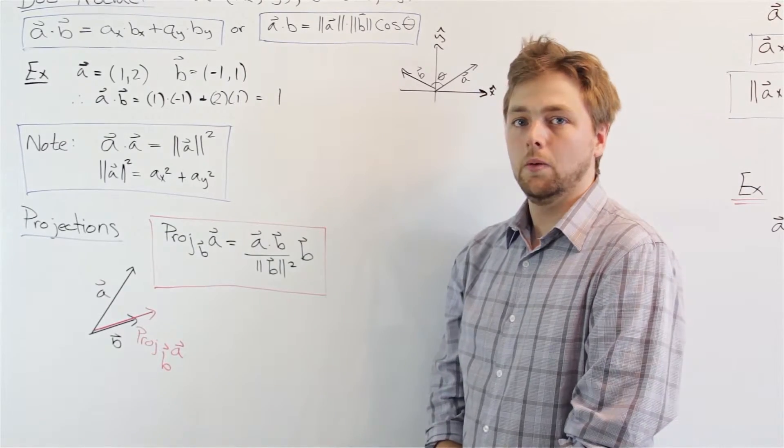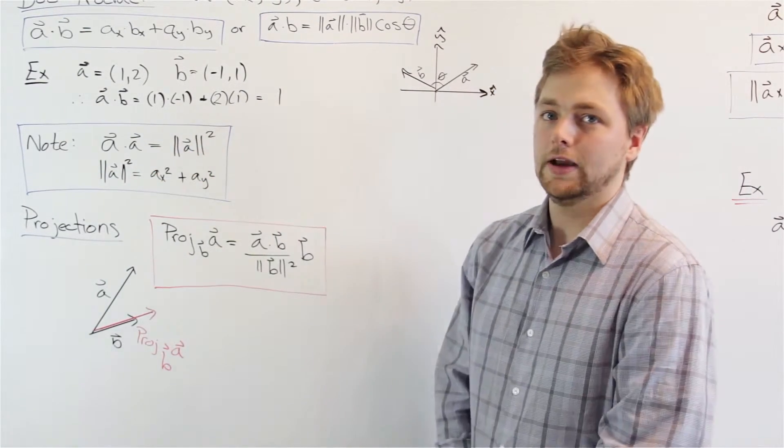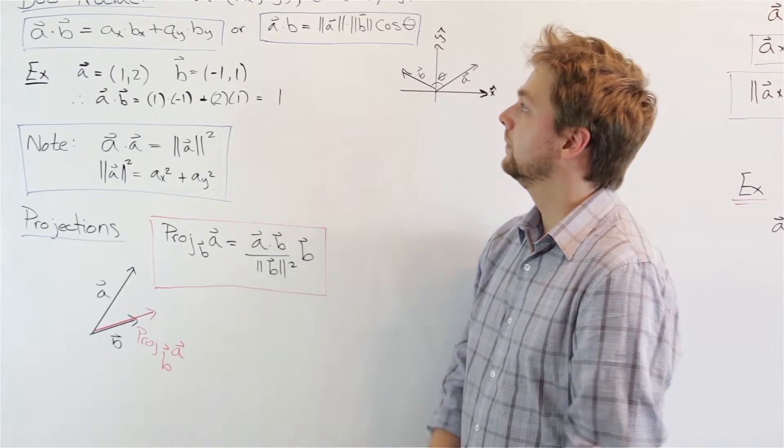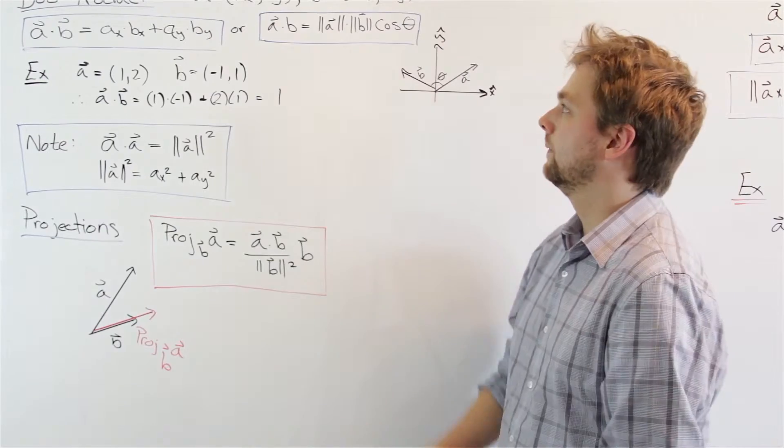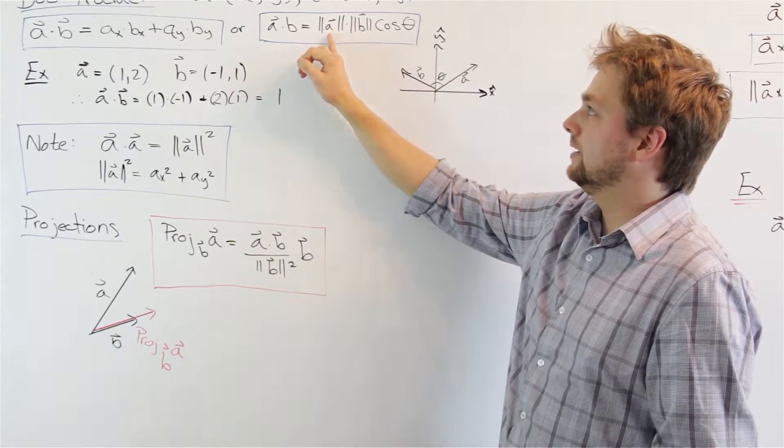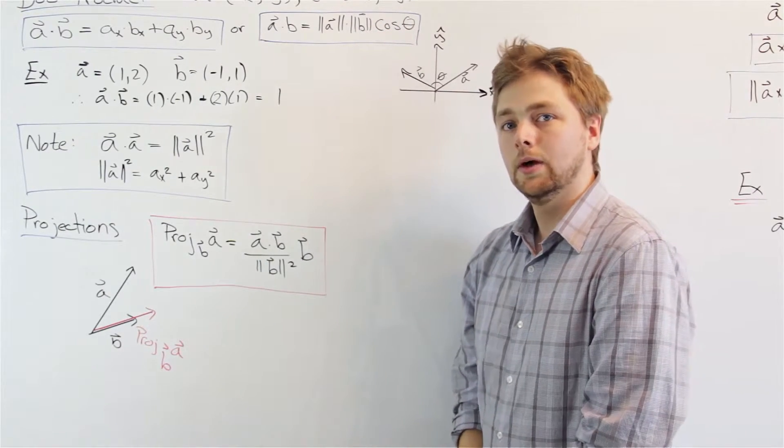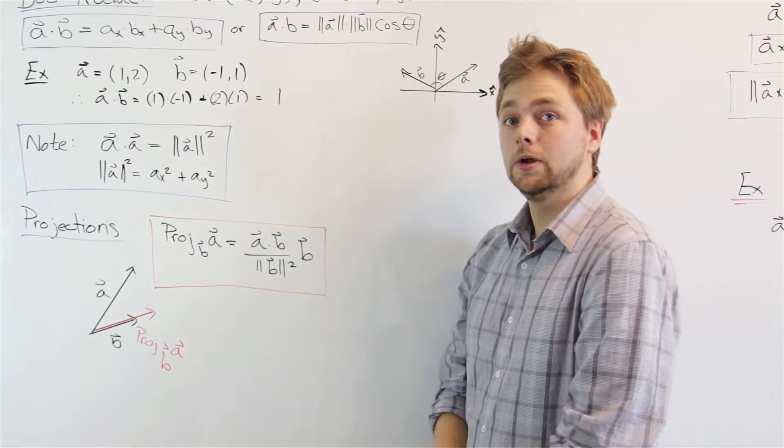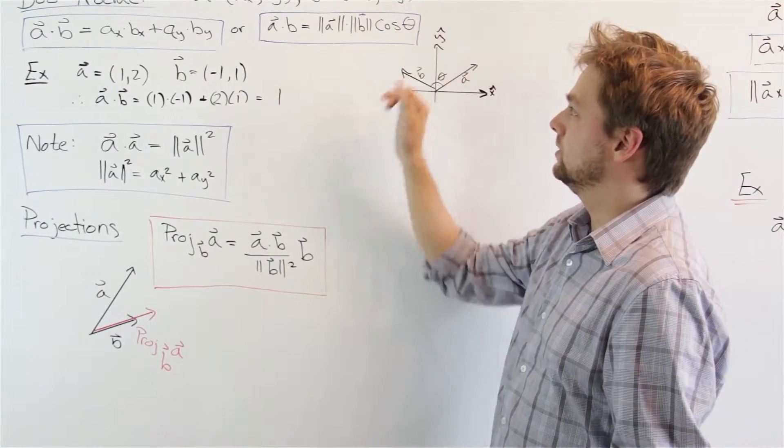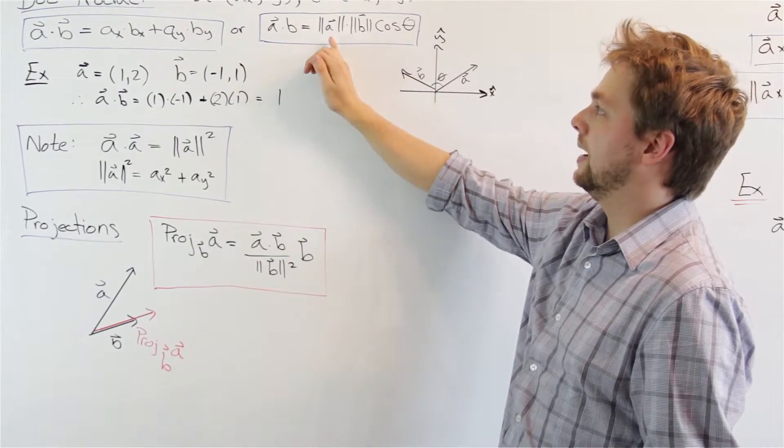The best situation to see what this actually might mean is, let's consider what would happen if we dotted a vector with itself. So, a dot a. Well, if we sub into each of these formulas, we can come up with an important relationship. If we sub into our first formula, we would have the magnitude of a times the magnitude of b times cos of the angle between them. Well, any two of the same vector will have an angle between them of 0 because they're the same. Cos of 0 is 1, which means that we end up with the dot product being equal to the magnitude squared.